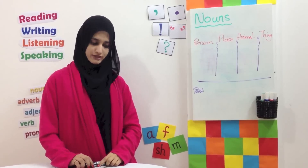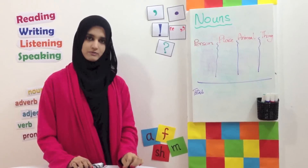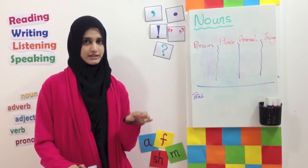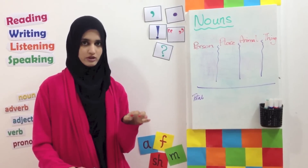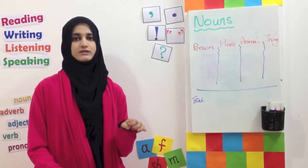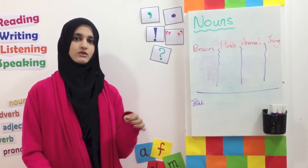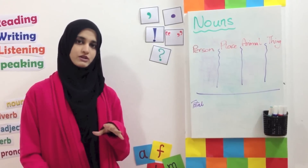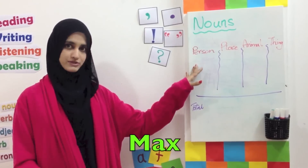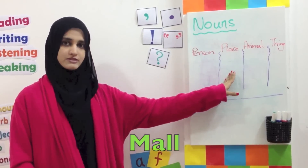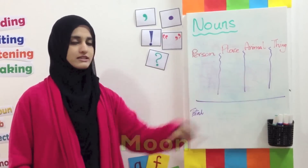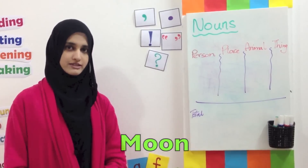Then one of your friends is going to pick up a letter from the bowl or a box. For example, the letter is M. All of you are going to write a person, name of a place, an animal, and a thing starting with the letter M.